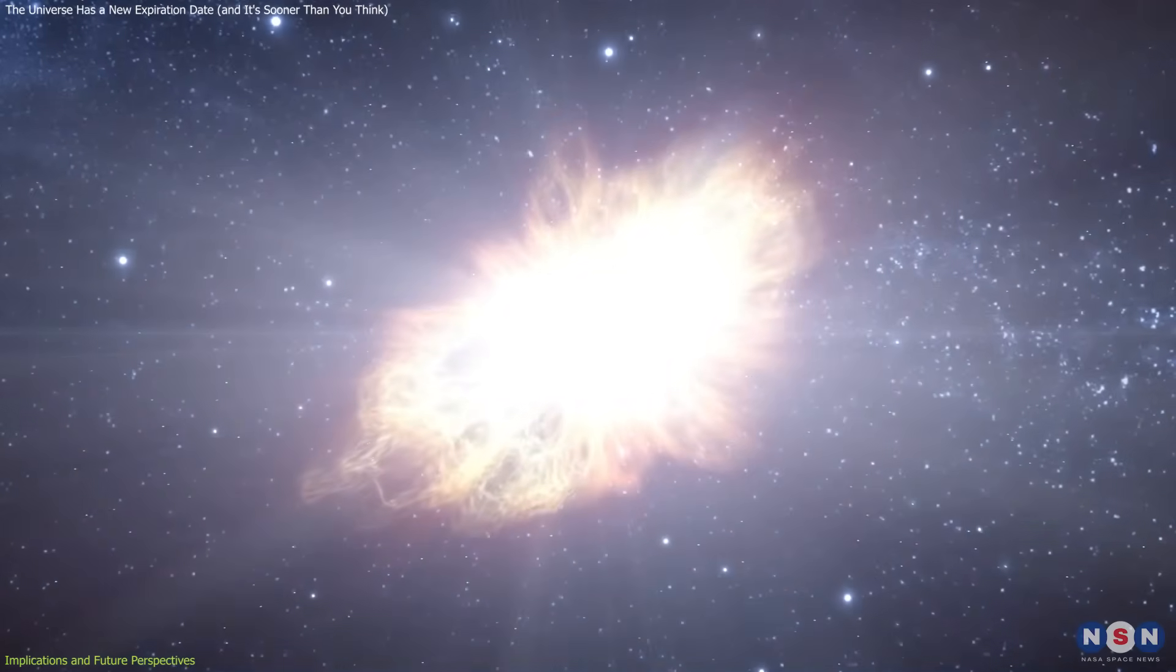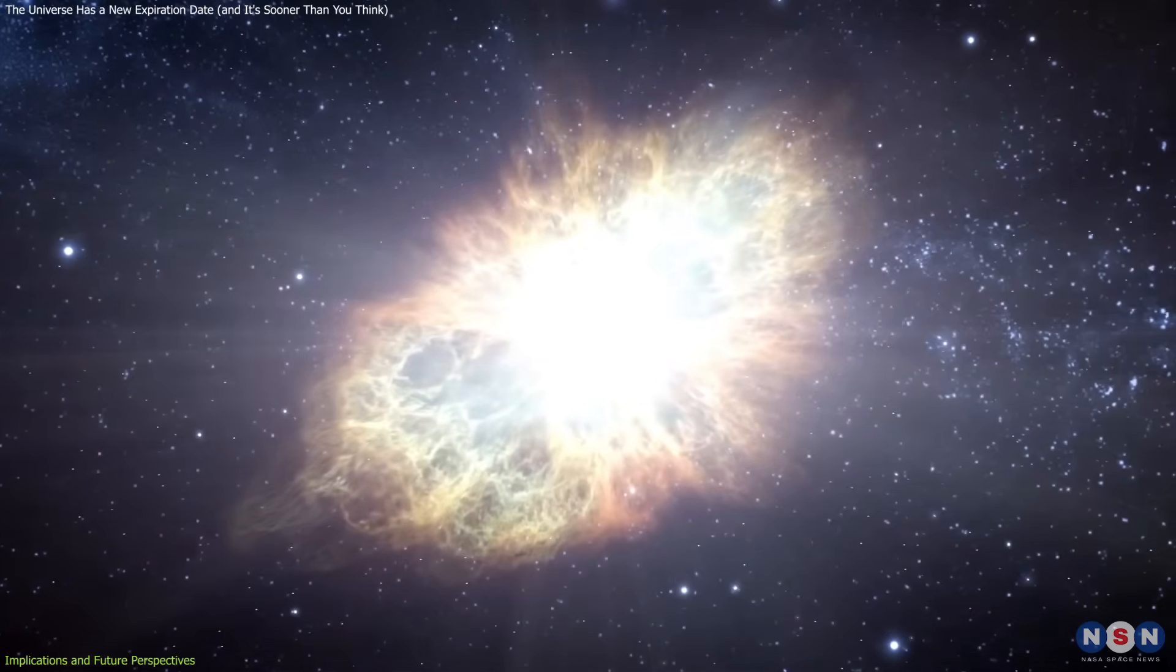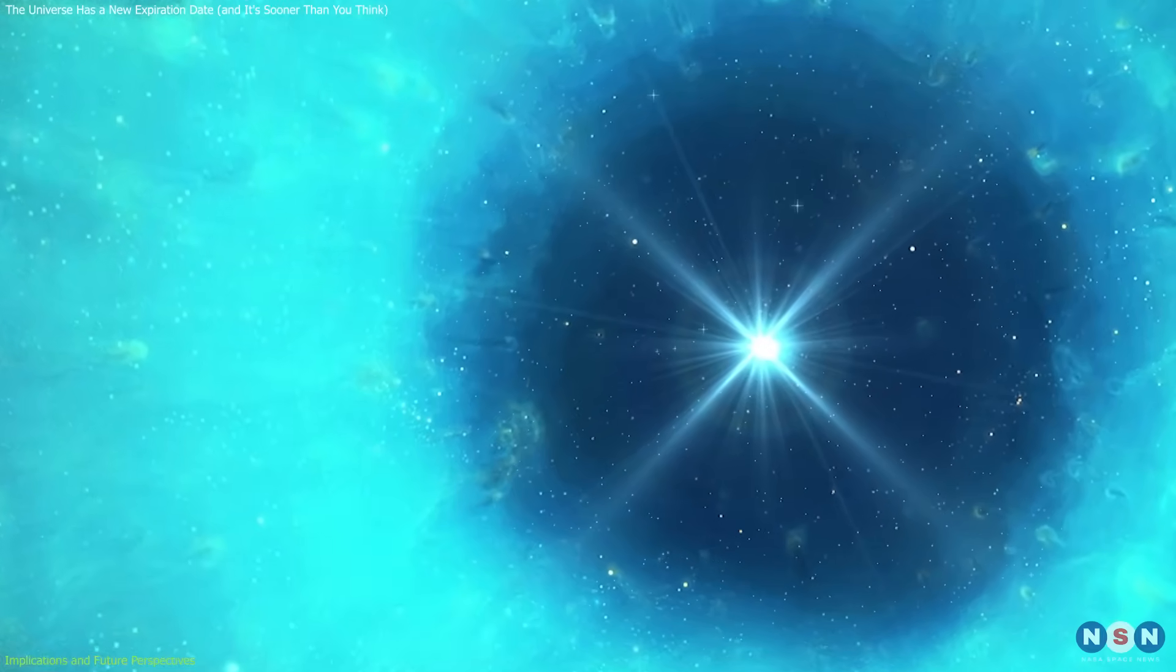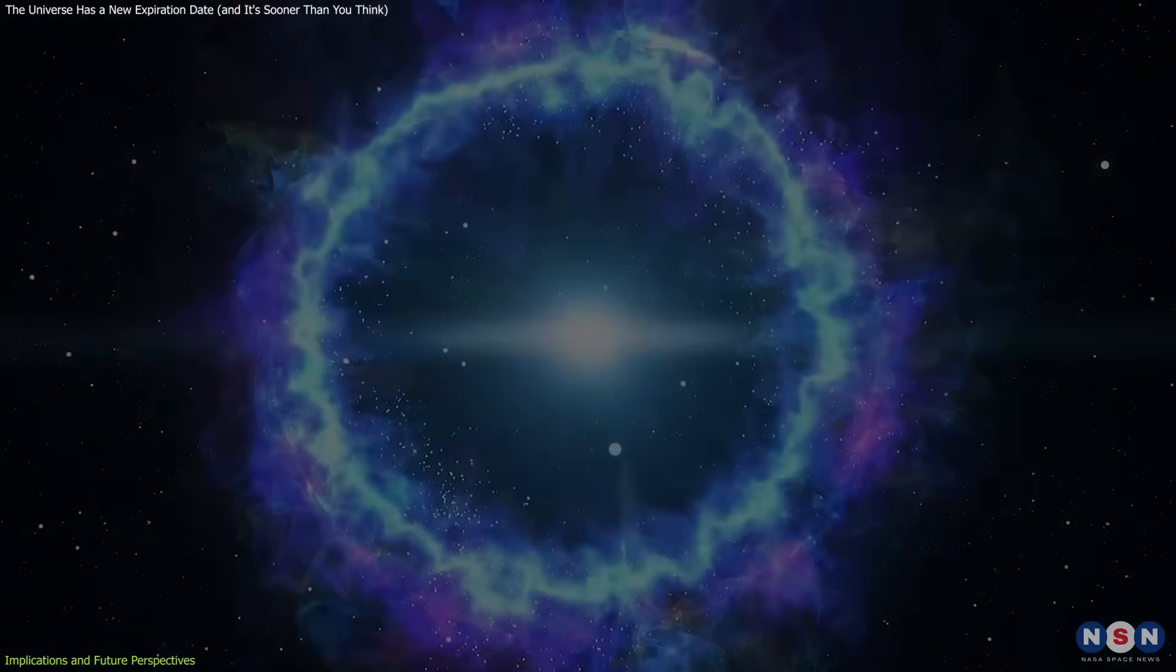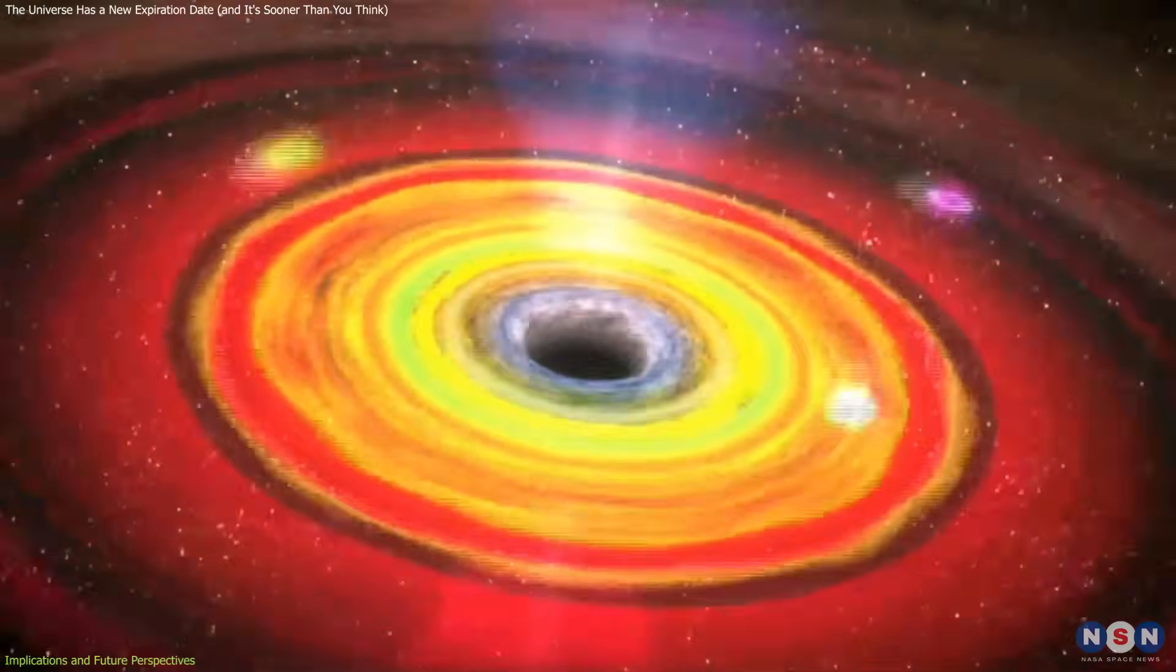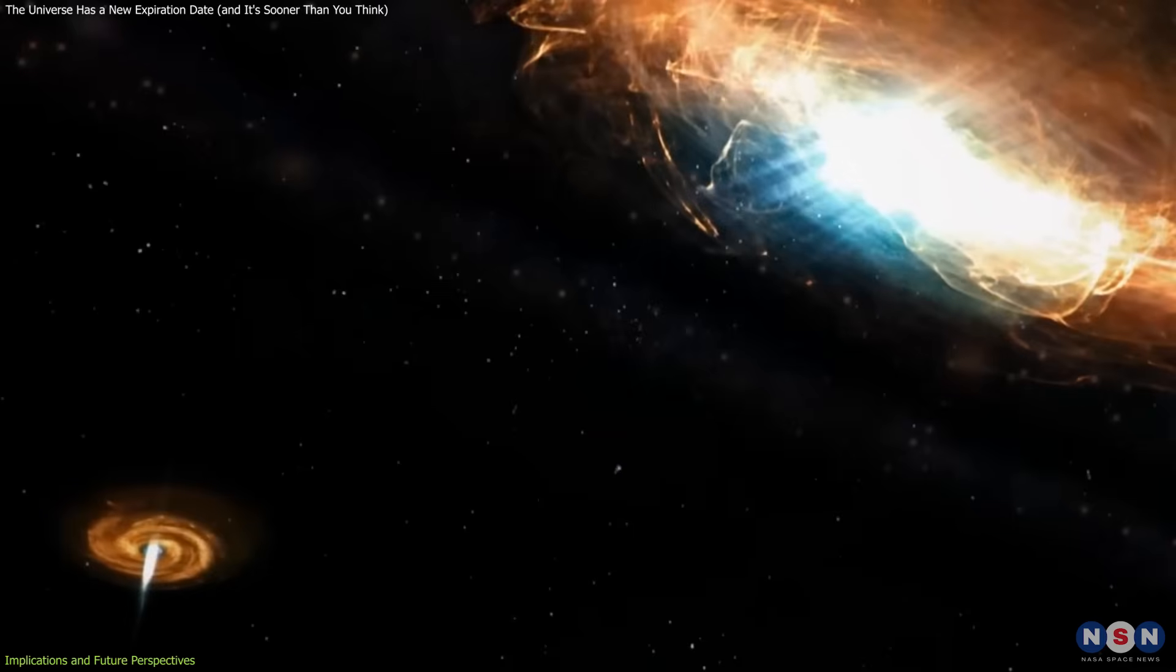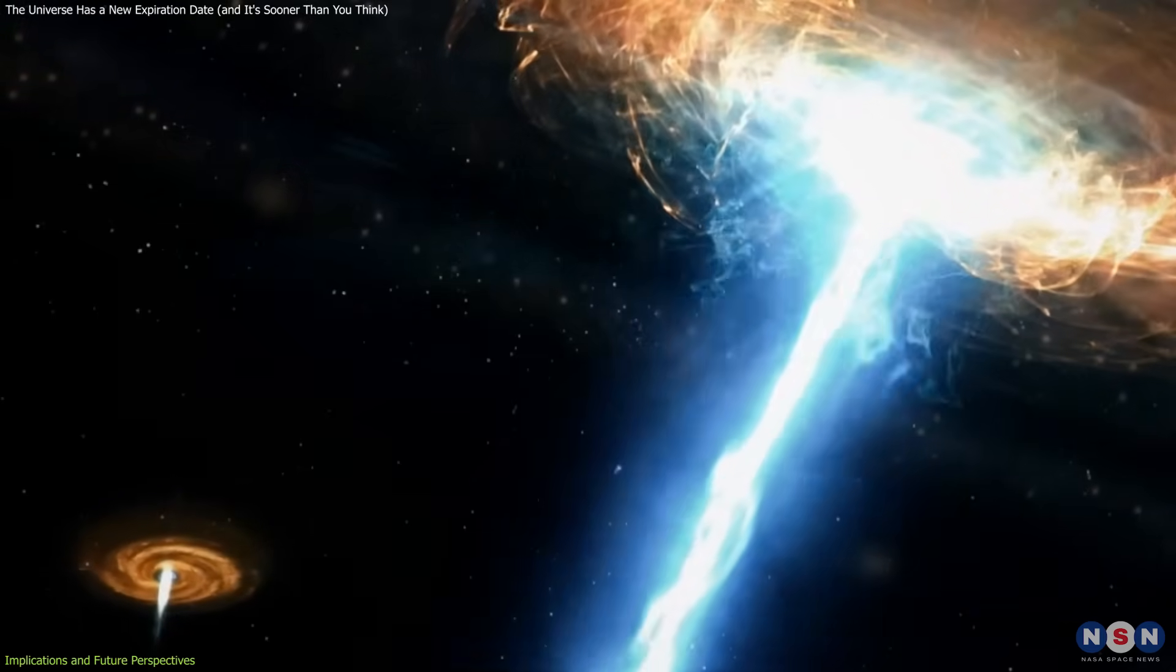The degenerate era, once thought to last until around 10 to the power of 100 years, has now been significantly shortened. With white dwarfs expected to evaporate in 10 to the 78th years, this stage may pass far faster than we assumed. Even more striking is the implication for the black hole era. If stellar black holes decay in 10 to the 67th years, their reign is shorter too. The black hole era, once envisioned as a defining chapter of the universe's twilight, now plays a more fleeting role.